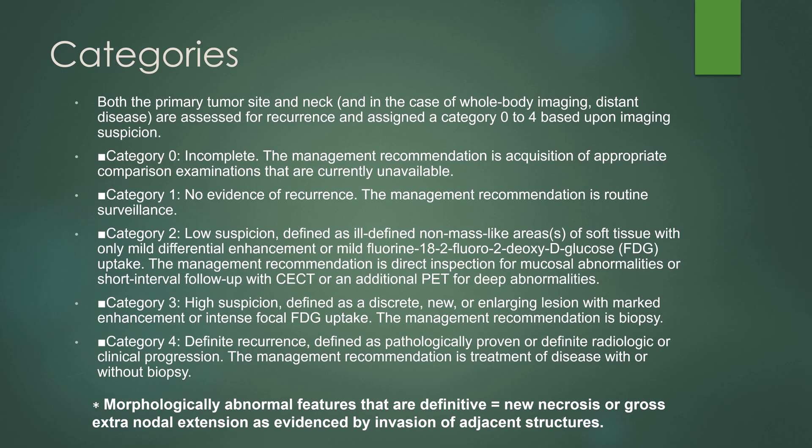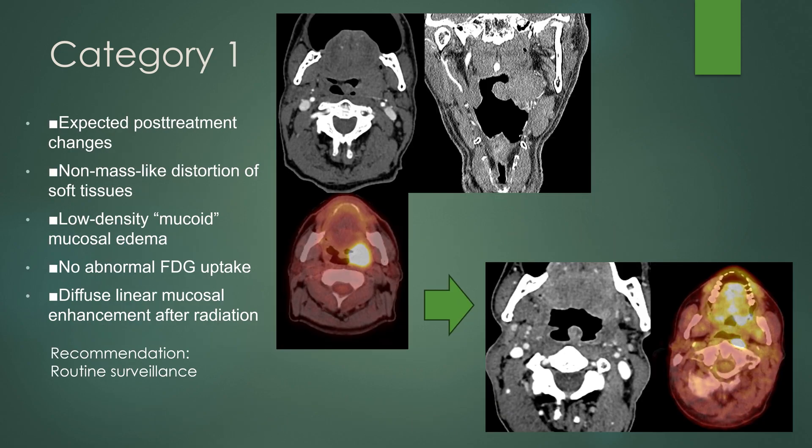A morphologically abnormal feature that is definitive can include new necrosis or gross extranodal extension, as evidenced by invasion of adjacent structures. Category 1 represents expected post-treatment changes: non-mass-like distortion of the soft tissues, low-density mucoid mucosal edema, and no abnormal FDG uptake. There can be some diffuse linear mucosal enhancement after radiation treatment, but definitely nothing mass-like.